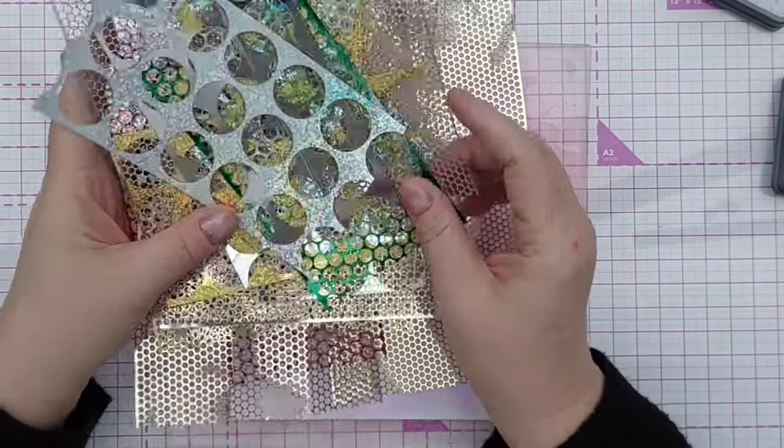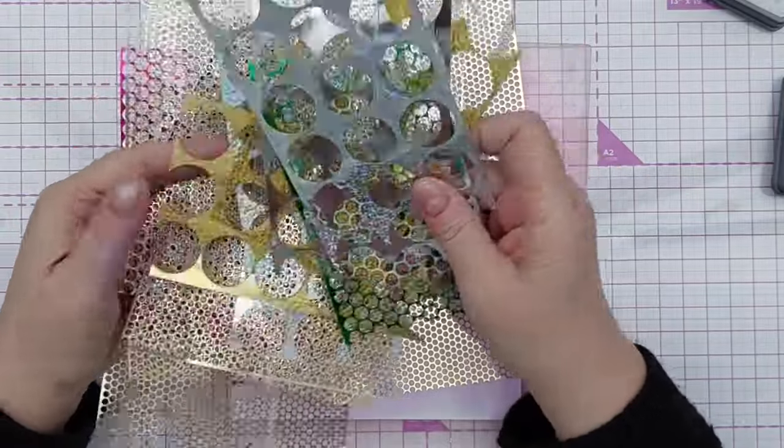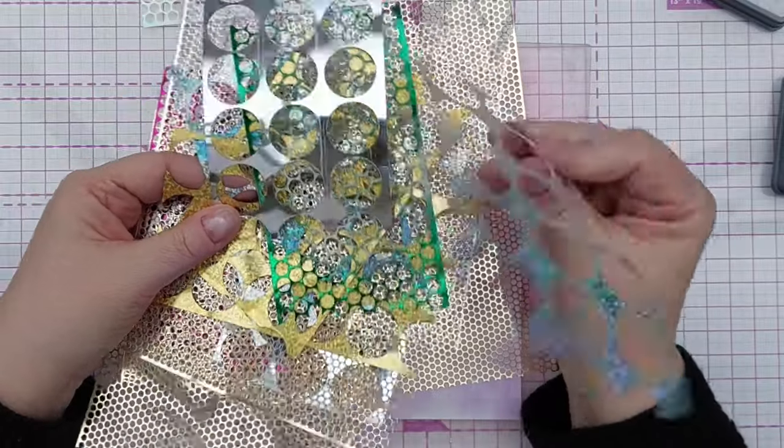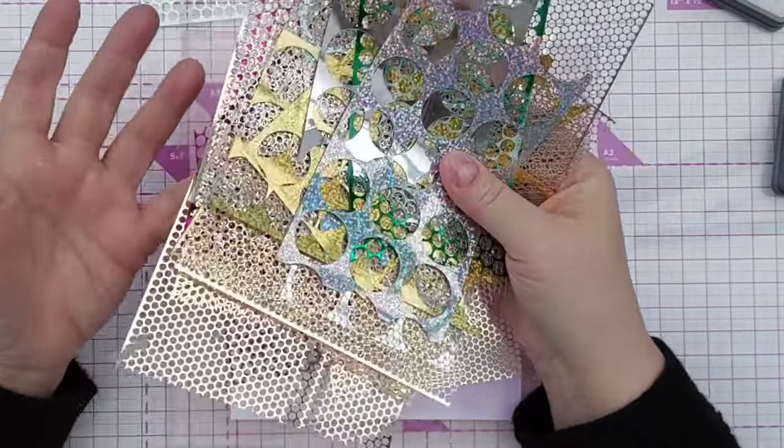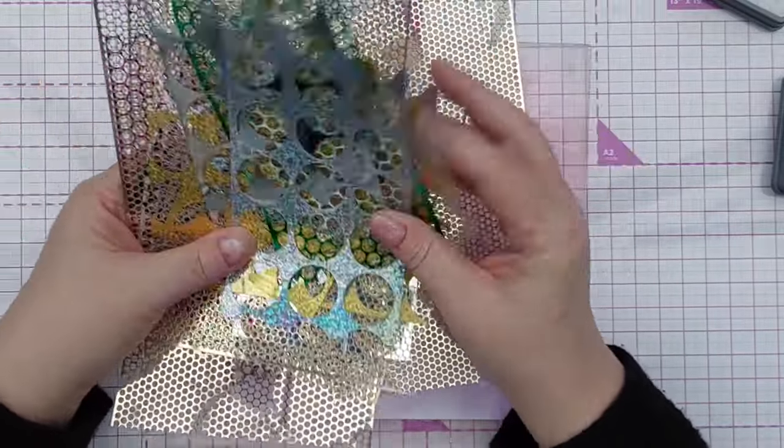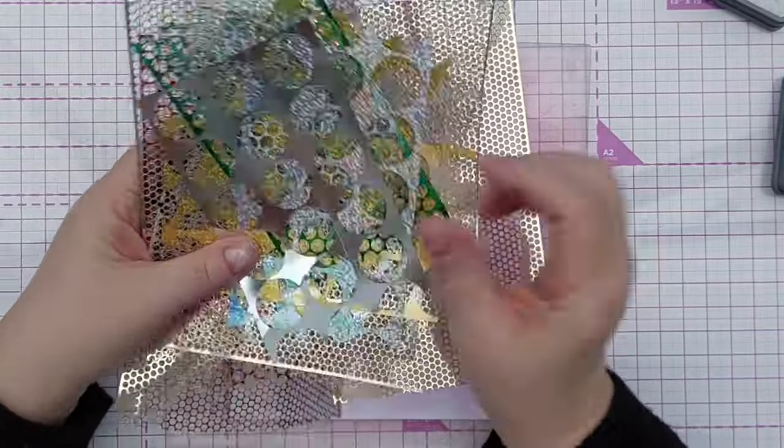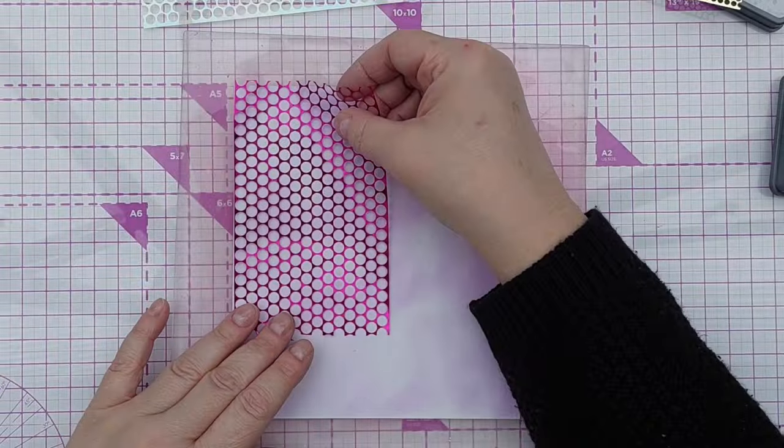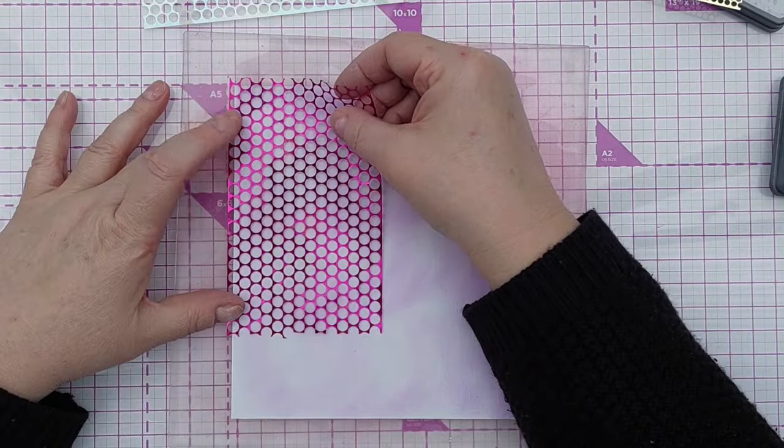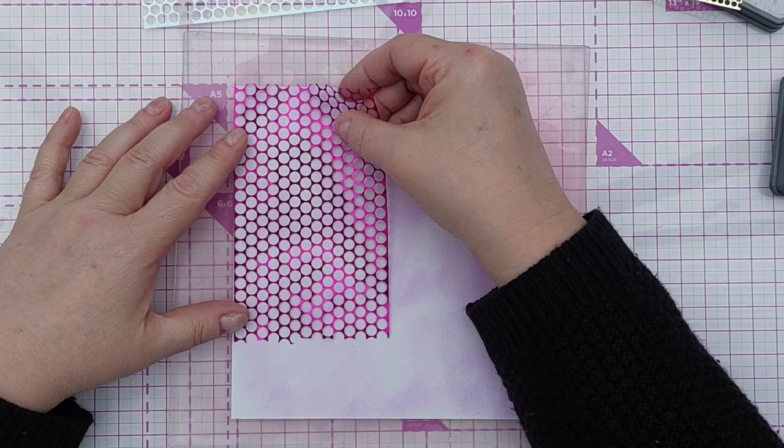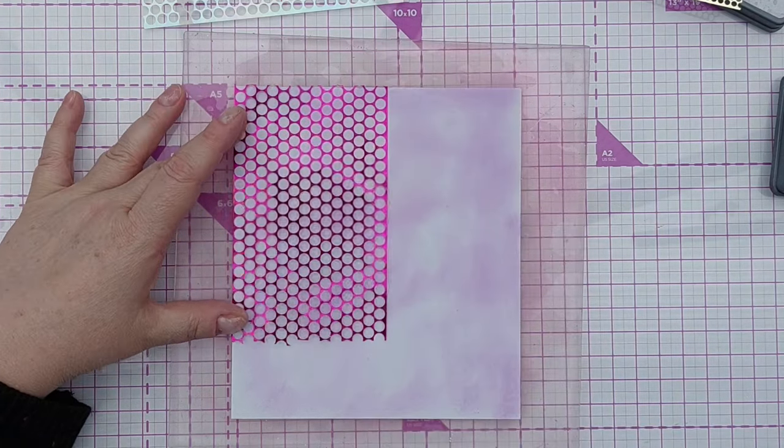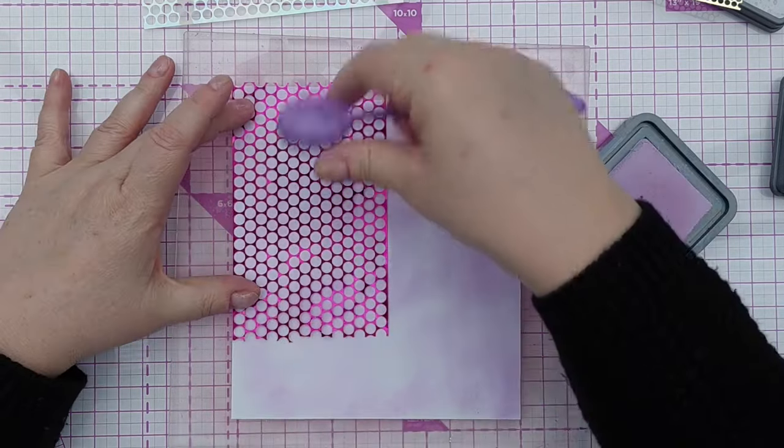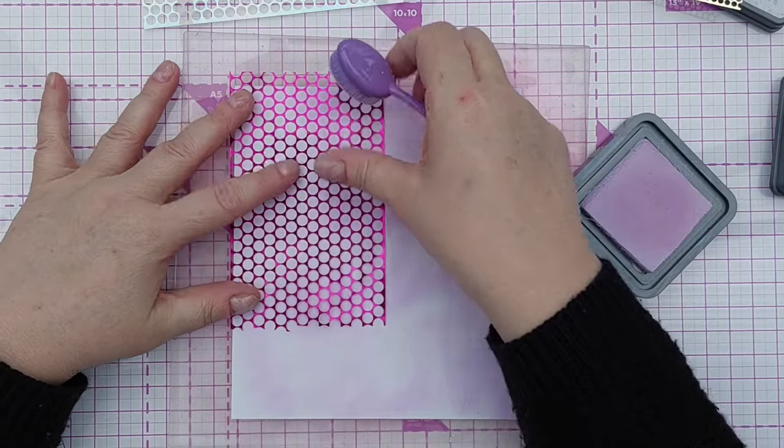I'm going to add this larger one with milled lavender to create some tone on tone circles.